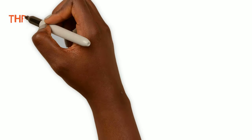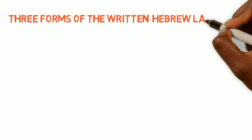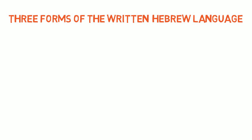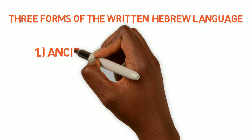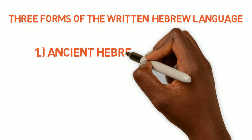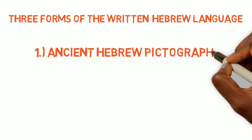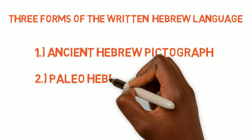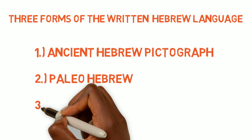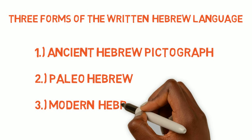We'll be going over three main forms of the written Hebrew language. There are other versions that exist, but these are the most commonly studied and used forms of Hebrew. We'll be learning about Ancient Hebrew Pictograph, the Paleo-Hebrew, and a little bit about the Modern Hebrew, just so that you know how to trace the Modern Hebrew back to the Ancient Pictograph and Paleo-Hebrew.